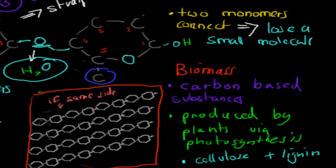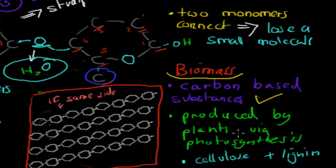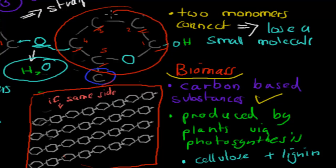We also need to know that cellulose is a major component of biomass. Biomass is basically anything produced by nature, especially by plants — it's carbon-based, with lots of carbon in the chain. Glucose, which is carbon-based, is produced by plants via photosynthesis. Plants then perform a condensation reaction to convert glucose into cellulose, so cellulose is indirectly a product of photosynthesis and is therefore part of biomass.